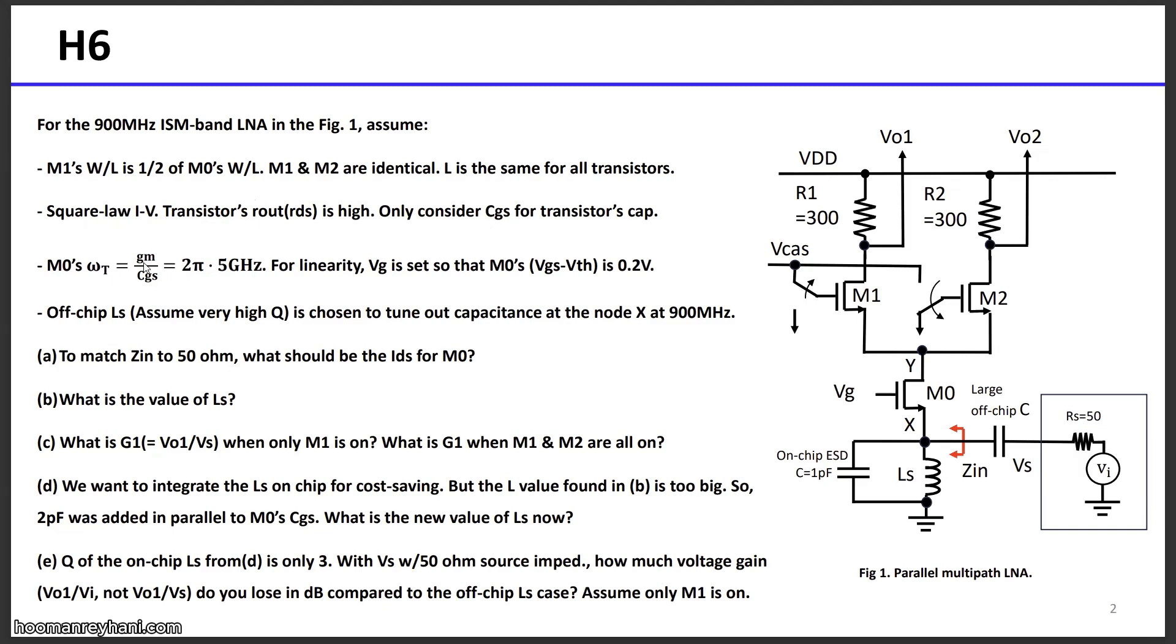For simplicity, we assume the ID characteristic for transistors have a square-law relationship. Transistor lambda is high. We only consider CGS for transistor's cap. M0's omega t, which is GM over CGS, is 2 pi times 5 GHz. For linearity, Vg is set so that M0's Vgs minus Vt is 0.2 volt. The optic inductor, which has a very high Q, is chosen to tune out the capacitance at the node X at 900 MHz. The question is, to match Zin to 50 ohm, what should be the ID for M0?